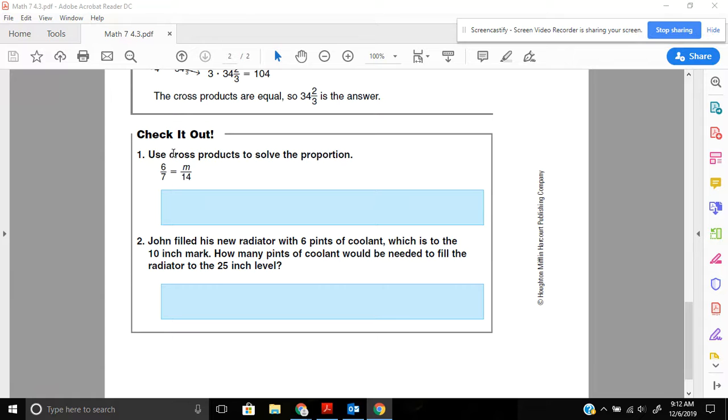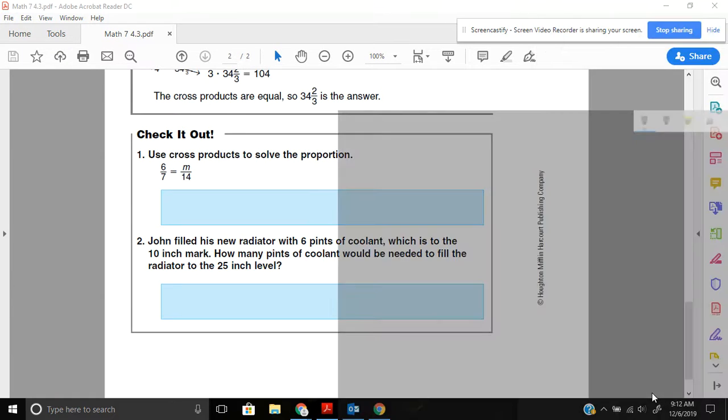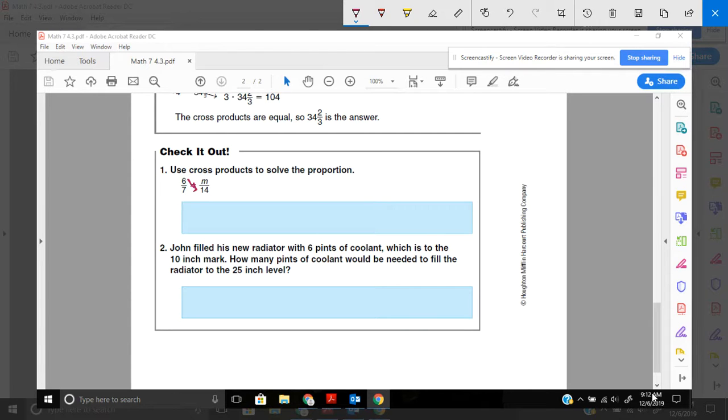Here, let me get my sketch pad here. 6 times 14, and you have to set that equal to 7 times M. So 7M equals, and 14 times 6, or 6 times 14 would give you 84. And then divide each side by 7. So 84 divided by 7 would give you a total of 12.